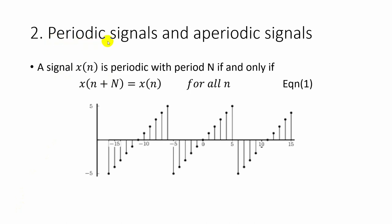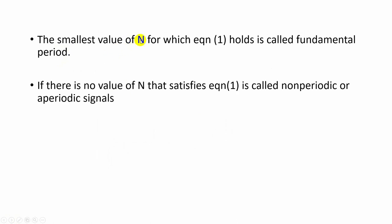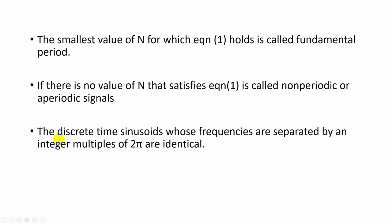The second classification of discrete time signals is periodic and aperiodic signals. A discrete time signal x(n) is periodic with period N if and only if x(n + N) is equal to the original signal x(n). The smallest value of N for which the periodic condition is true is called the fundamental period. If no value of N satisfies the periodic condition, the signal is called non-periodic or aperiodic. A property of discrete time signals states that discrete time sinusoids whose frequencies are separated by an integer multiple of 2π are identical.